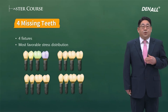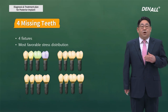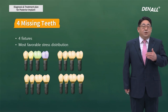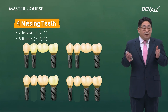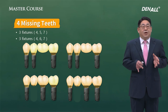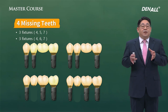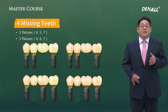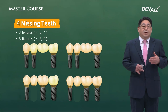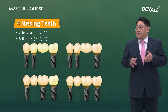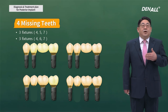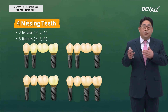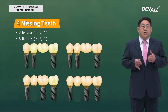When there are four teeth missing, various cases exist. The best results can be achieved by placing four implants. If four teeth are missing, we can also place three implants and frequently provide bridge-form prostheses. In various cases, you need to weigh the pros and cons to come up with a posterior design and set your treatment plan. By doing this, you'll be able to get good results.